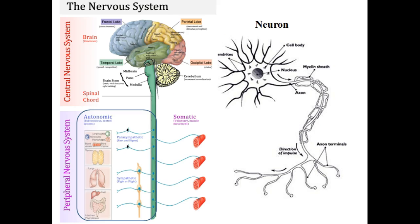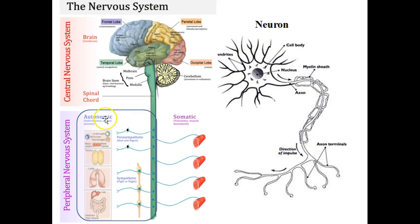This diagram shows the nervous system divided into central and peripheral nervous systems. The peripheral nervous system is divided into autonomic and somatic, and the autonomic is divided into parasympathetic and sympathetic. This image shows a neuron, which shows the cell, the dendrites, and the axon.